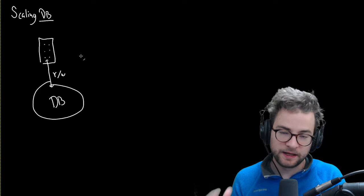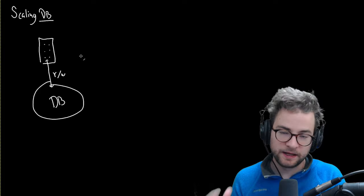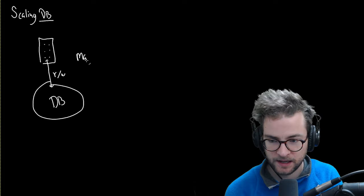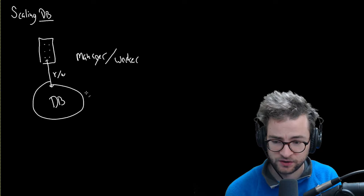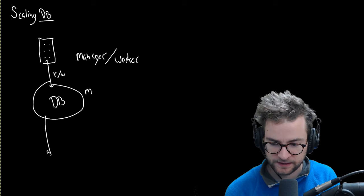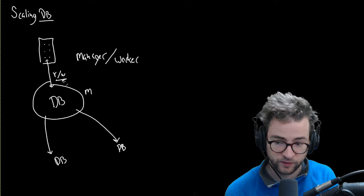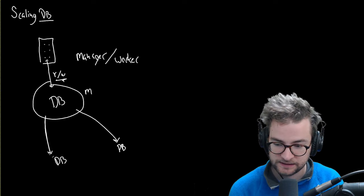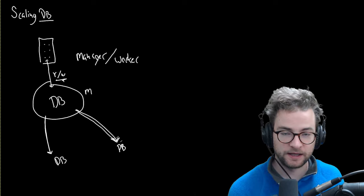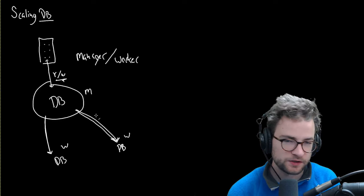That leads us to our first real scalable option for most databases — what I like to call the manager-worker model. The first database acts as the manager. The manager gets read from and written to, and then it can duplicate that data down to other worker databases. So we're getting durability and reliability across those worker instances.